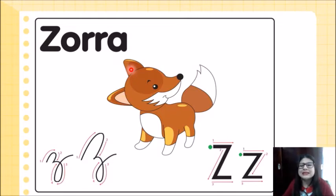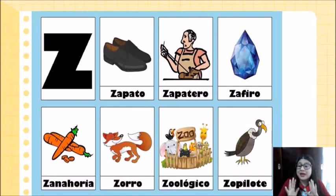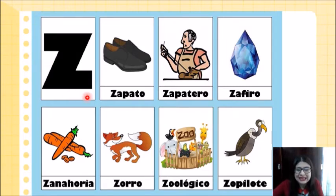Ahora, ¿recuerdan cómo es el sonido de la letra Z? Muy bien, la letra Z suena como si fuera una S, ¿verdad? Suena... ¡Fantástico, chicos! Ahora, existen muchas palabras que comienzan con la letra Z, Z como puede ser Z de zapato, Z de zapatero, Z de zafiro, Z de zanahoria, Z zorro, Z zoológico, Z zopilote. Todos estos objetos que acabamos de mencionar comienzan con la letra Z.